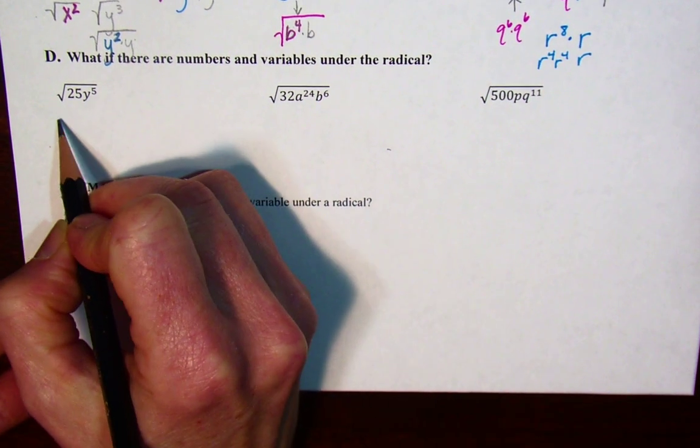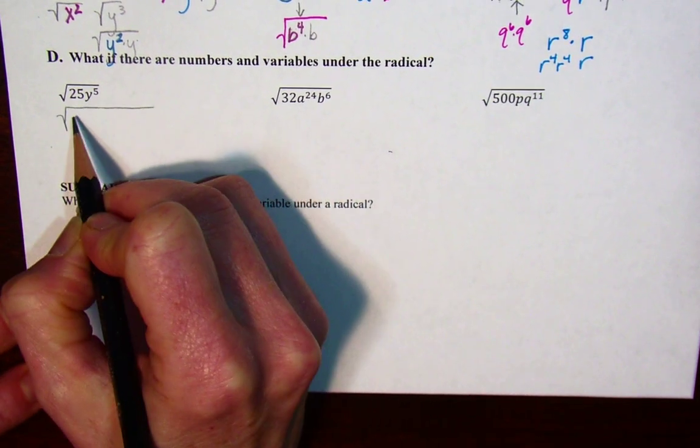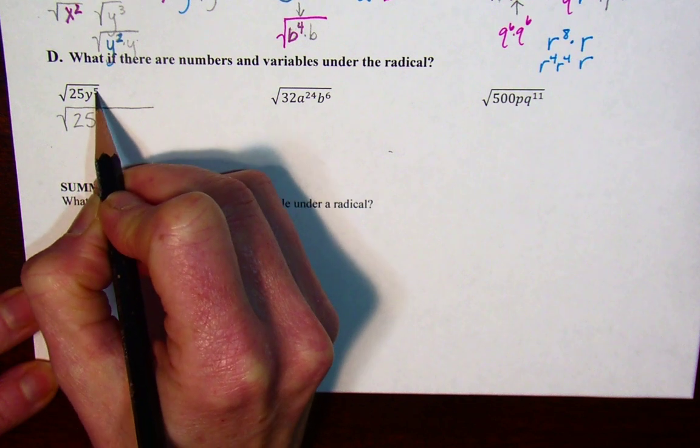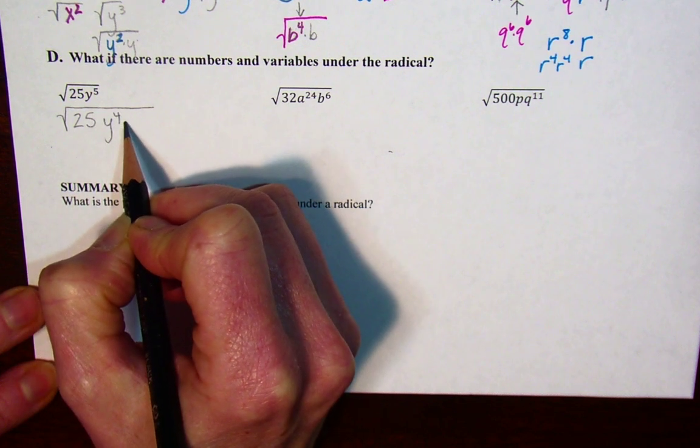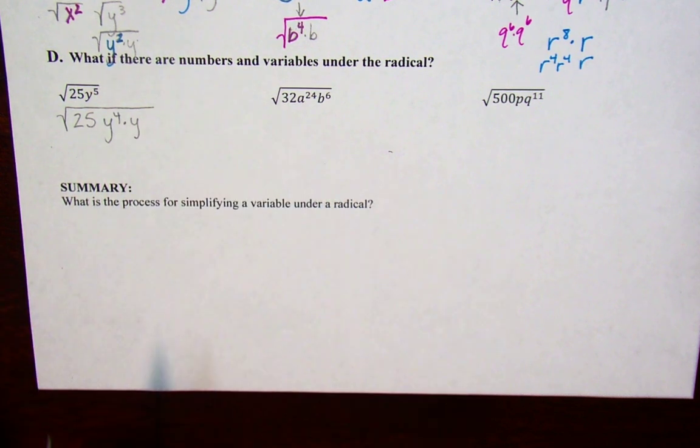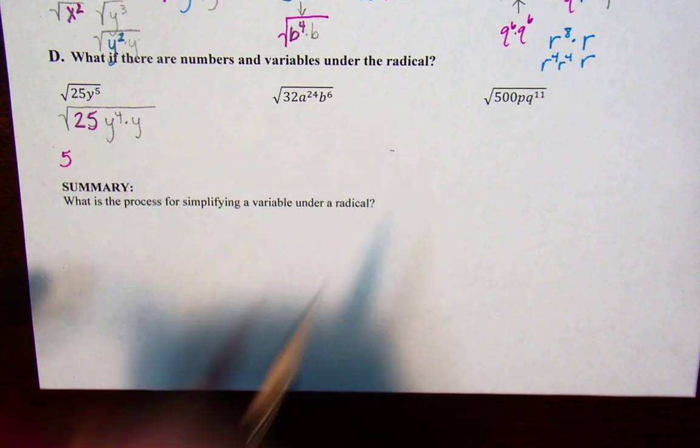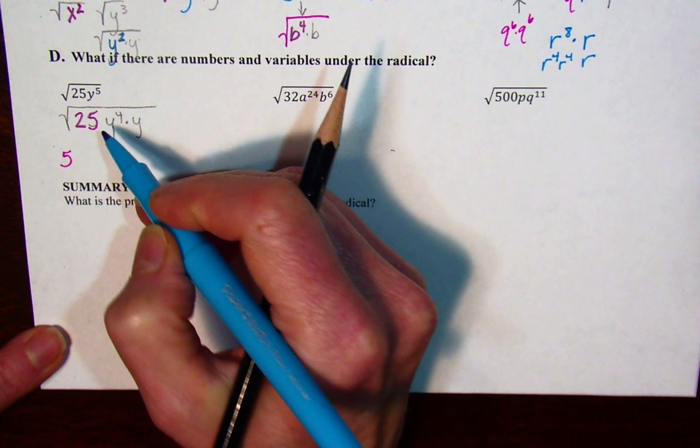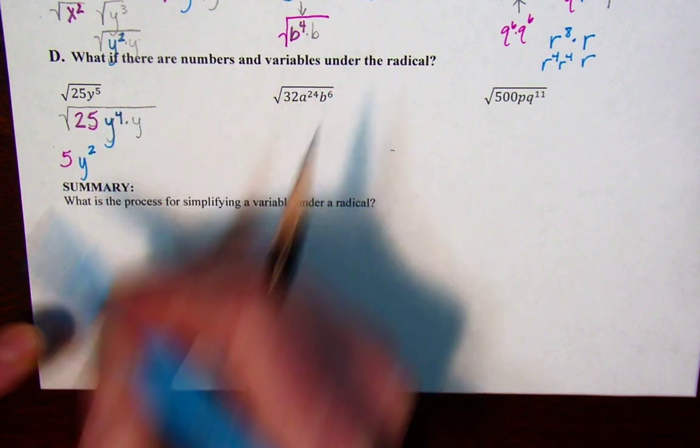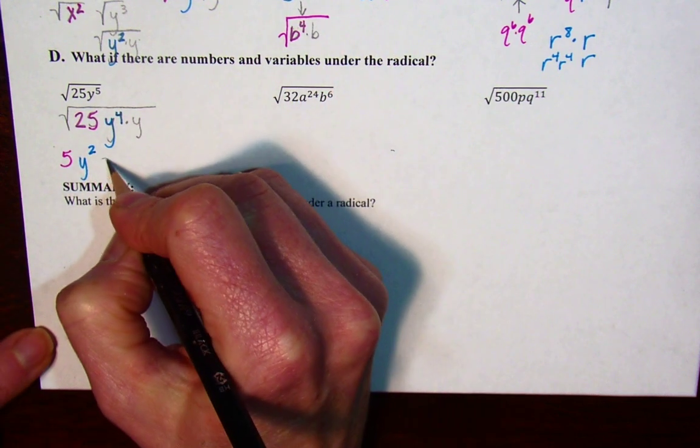When I think about the square root of 25, fortunately that's a perfect square. But y to the fifth is y to the fourth times y. So when I square root this, 25 is 5, when I square root y to the fourth that's y squared, and then the square root of y is still there.